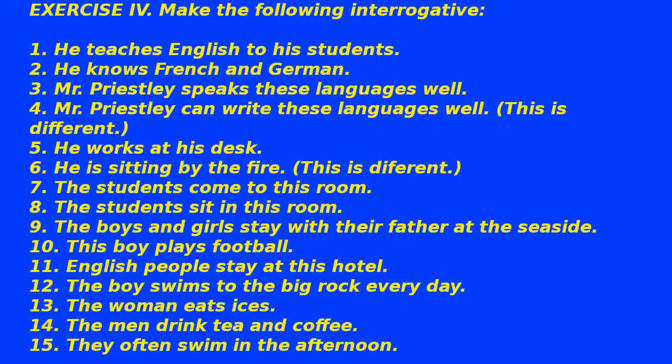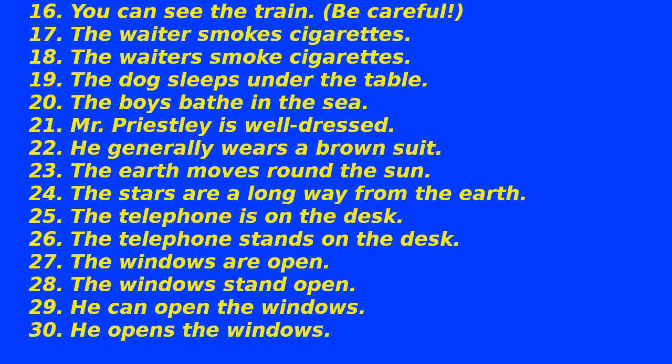13. The woman eats ices. 14. The men drink tea and coffee. 15. They often swim in the afternoon. 16. You can see the train — be careful. 17. The waiter smokes cigarettes. 18. The waiters smoke cigarettes. 19. The dog sleeps under the table. 20. The boys bathe in the sea. 21. Mr. Priestley is well dressed. 22. He generally wears a brown suit. 23. The earth moves round the sun. 24. The stars are a long way from the earth. 25. The telephone is on the desk. 26. The telephone stands on the desk. 27. The windows are open. 28. The windows stand open. 29. He can open the windows. 30. He opens the windows.